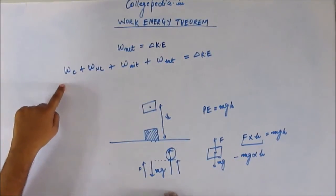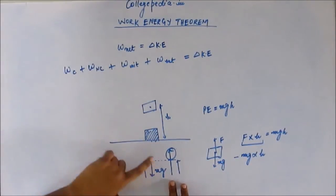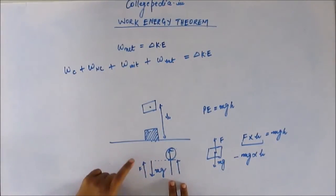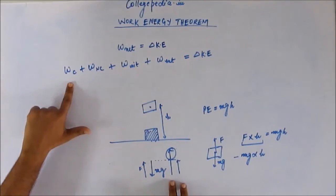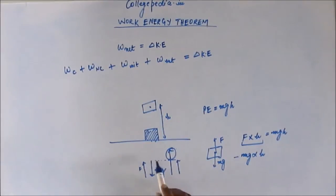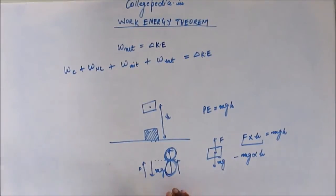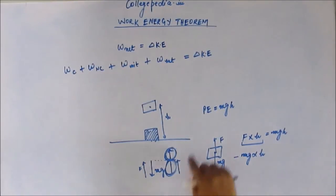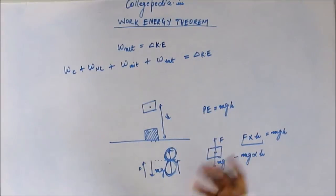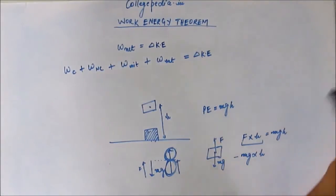Revisiting this equation: work done by the external force will be positive and numerically greater than work done by the conservative or internal force. Work done by the earth is still negative and cancels part of the external work, but the external work is numerically greater. So adding the negative and positive, we're still left with a positive part, and that gives kinetic energy to the block. This should now feel very natural — this is how the equation works.